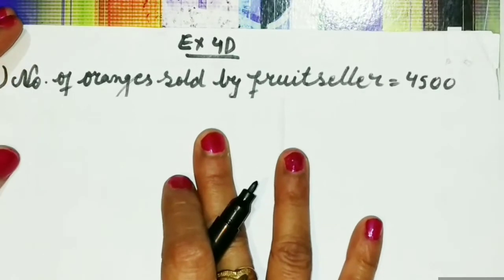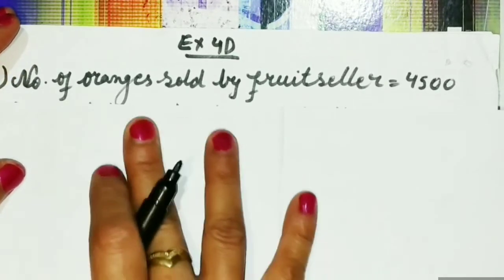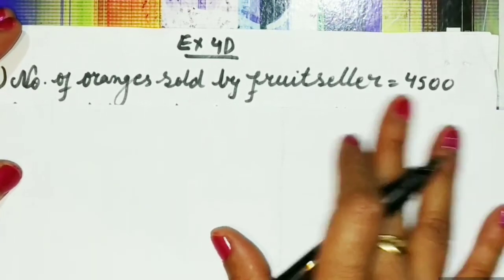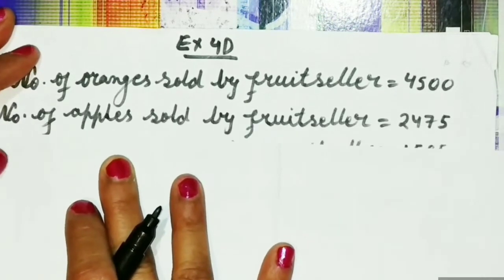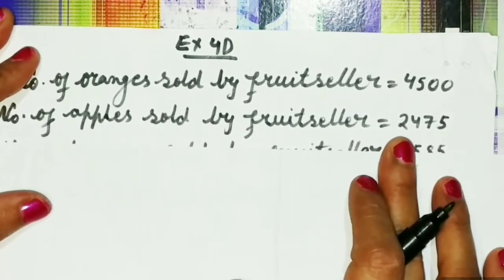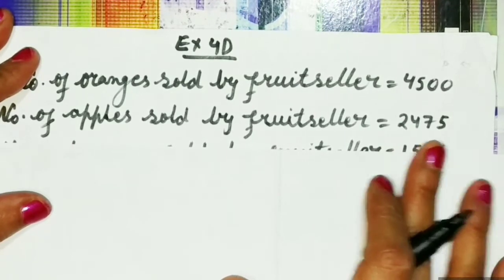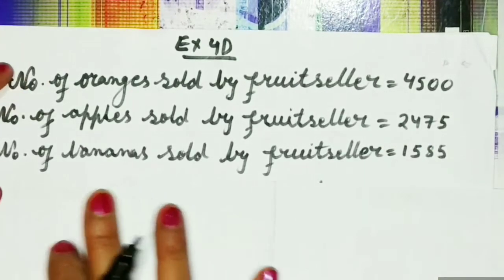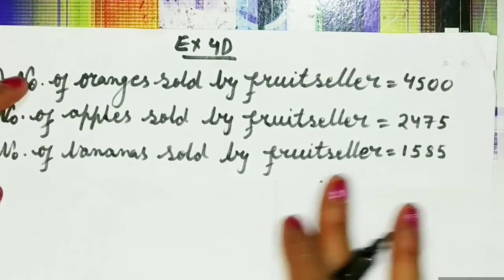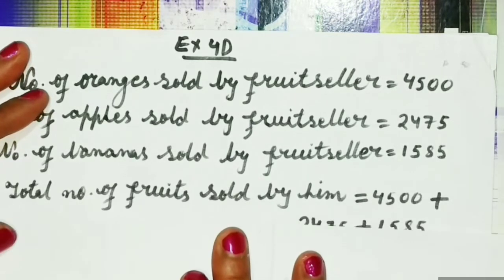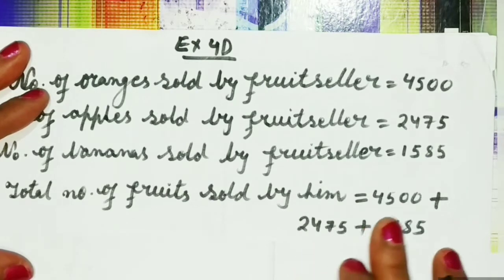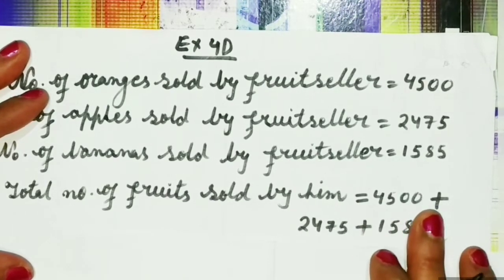Let us solve question number six. The first statement: number of oranges sold by the fruit seller is equal to 4500. The second statement: number of apples sold by the fruit seller is equal to 2475. The third statement: number of bananas sold by the fruit seller is equal to 1585. So we have to find the total number of fruits sold by him. For that we will add 4500 plus